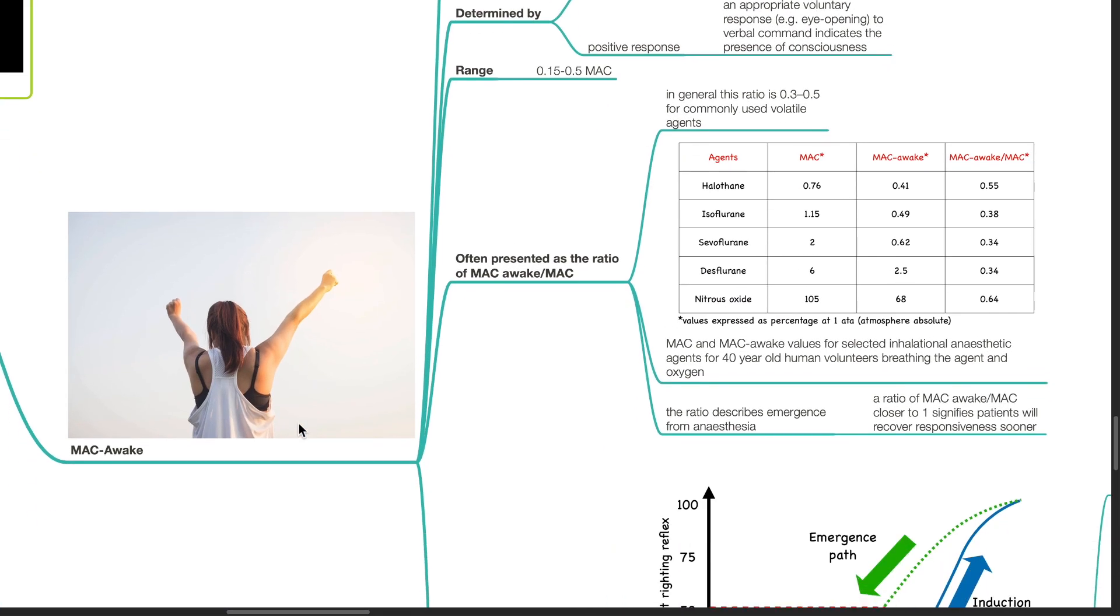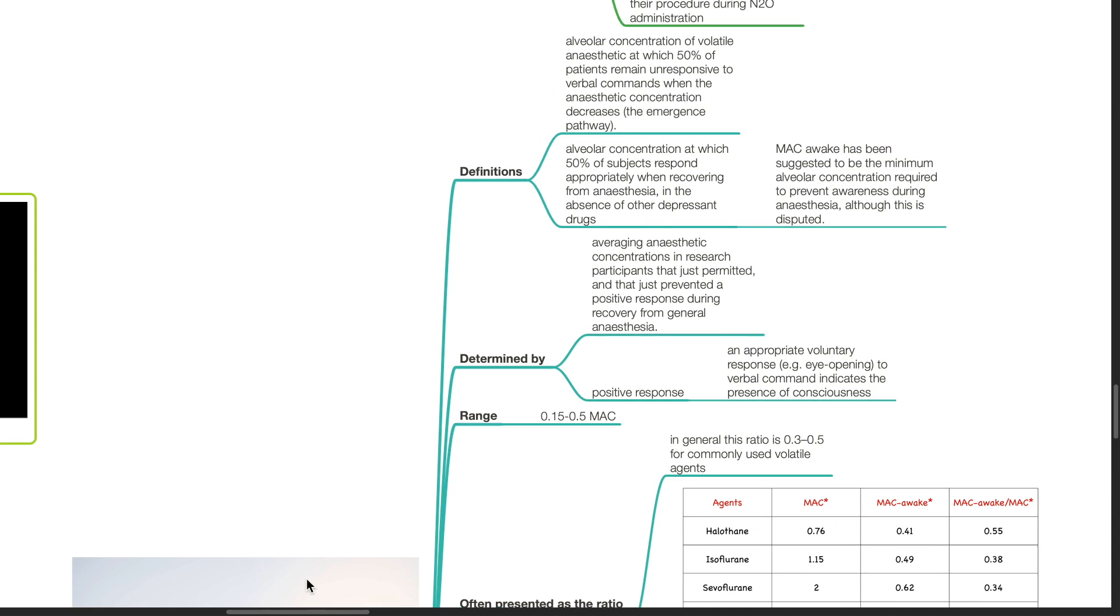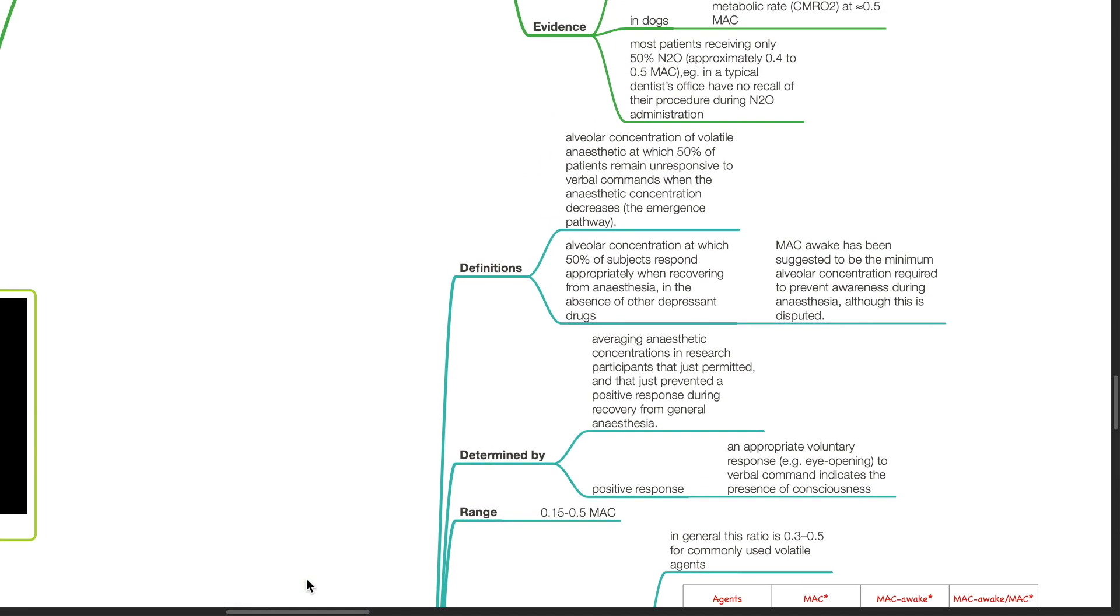MAC awake: this is defined as the alveolar concentration of volatile anesthetic at which 50% of patients remain unresponsive to verbal commands when the anesthetic concentration decreases, i.e. the emergence pathway. MAC awake has been suggested to be the minimum alveolar concentration required to prevent awareness during anesthesia, however this is disputed.